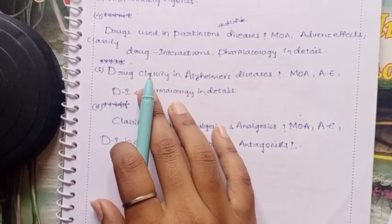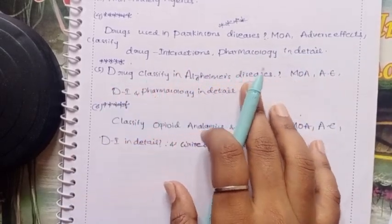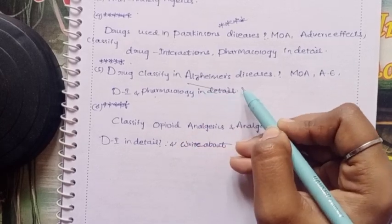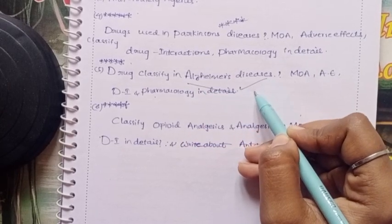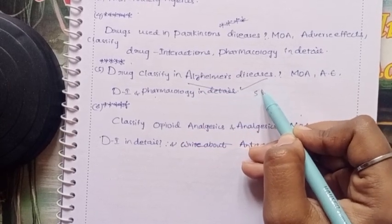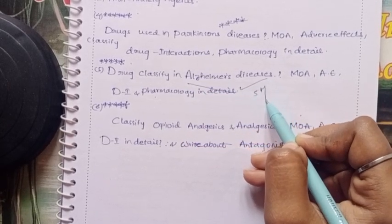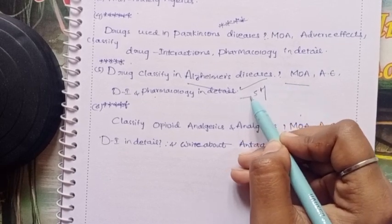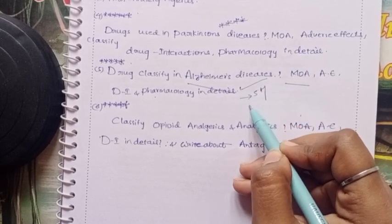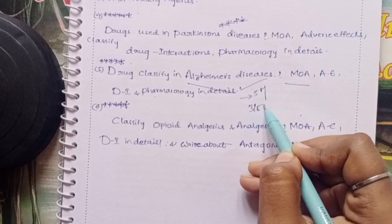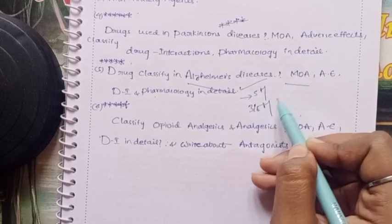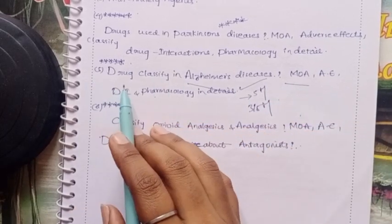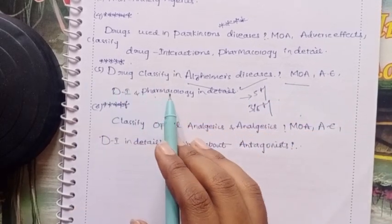Next, classify drugs used in Alzheimer's disease. The classification is worth 5 marks and is very important. Cover the mechanism of action, adverse effects, and drug interactions in pharmacology — these are 5-mark topics.